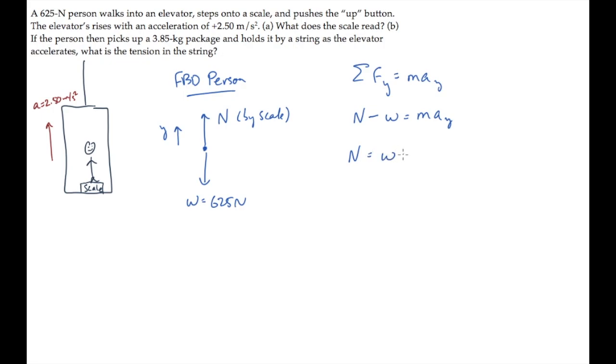Solve this for the normal force. Before we can substitute values, we need to know the person's mass, m. Recall that their weight, 625 newtons, equals mg. So we can solve for the mass, that equals weight divided by g, finding that it equals 63.8 kilograms.